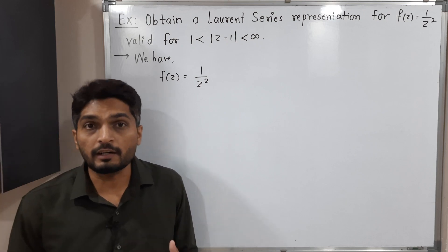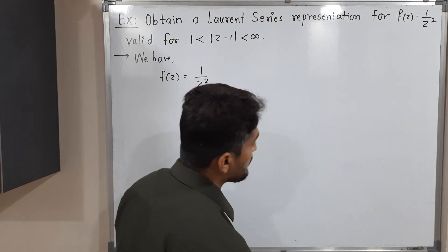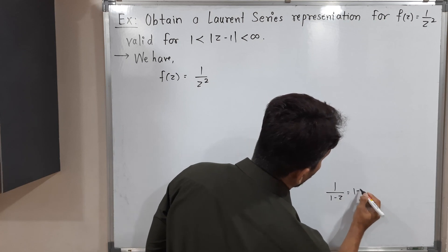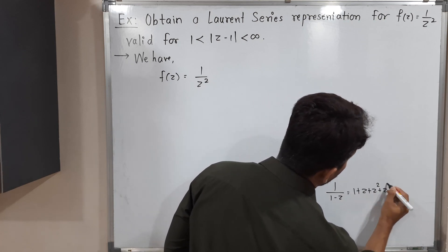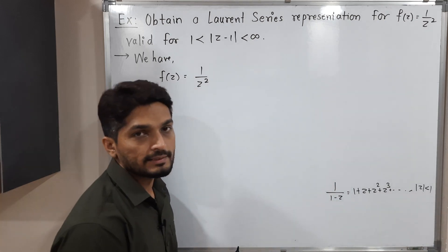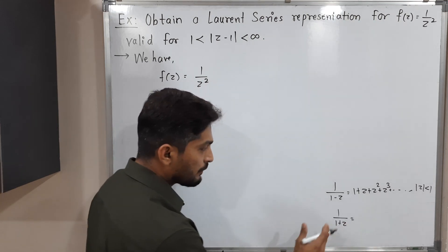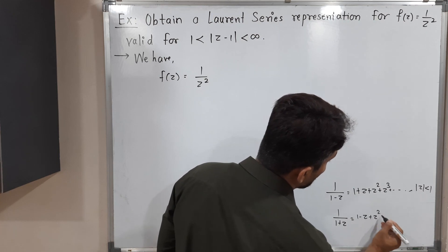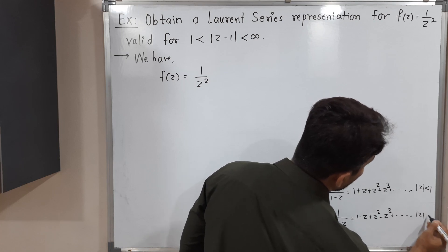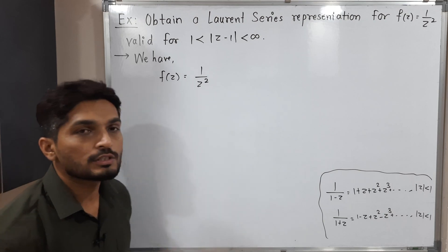Before starting, let me remind you of the two series mostly used for Laurent series. First: 1/(1-z) = 1 + z + z² + z³ + ..., valid for |z| < 1. Second: 1/(1+z) = 1 - z + z² - z³ + ..., with alternating signs, also valid for |z| < 1. Both series are essentially the same with different signs, and in most cases we use these two series to find the Laurent expansion.